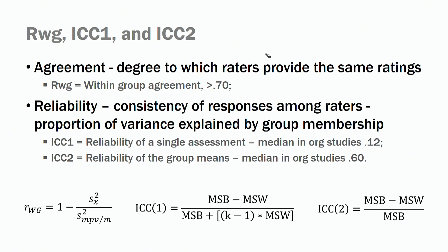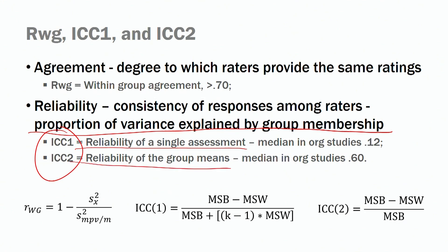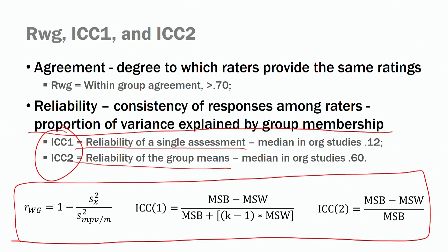Another way to talk about reliability is as the proportion of variance explained by group membership. We have two ways to calculate reliability, and in management we tend to report both ICC1 and ICC2. ICC1 is the reliability of a single assessment, and ICC2 is the reliability of the group means. The equations are included in the slides, and a file that calculates RWG, ICC1, and ICC2 is available in the description of this video — just click the link in the description.